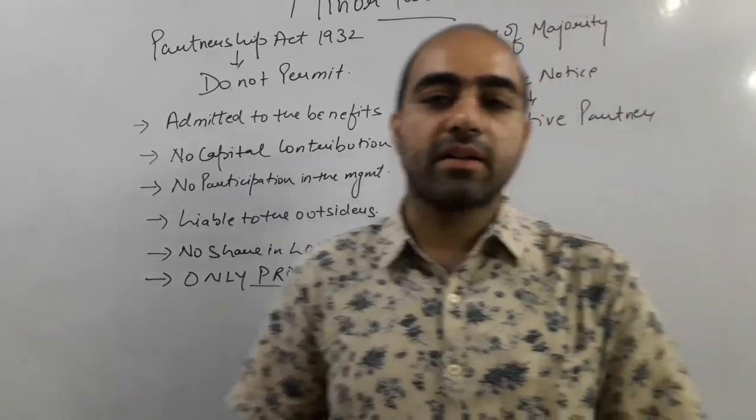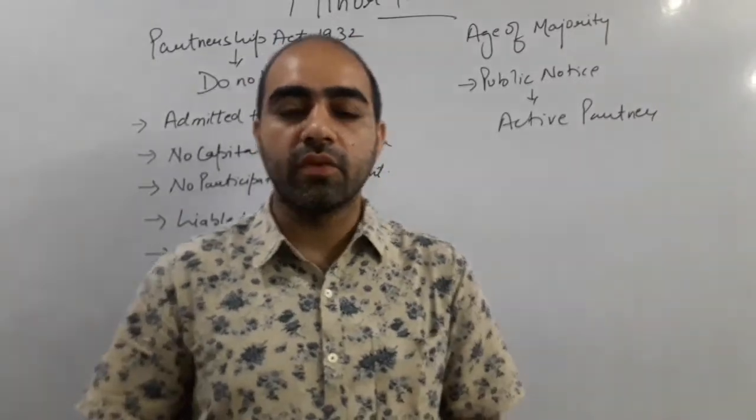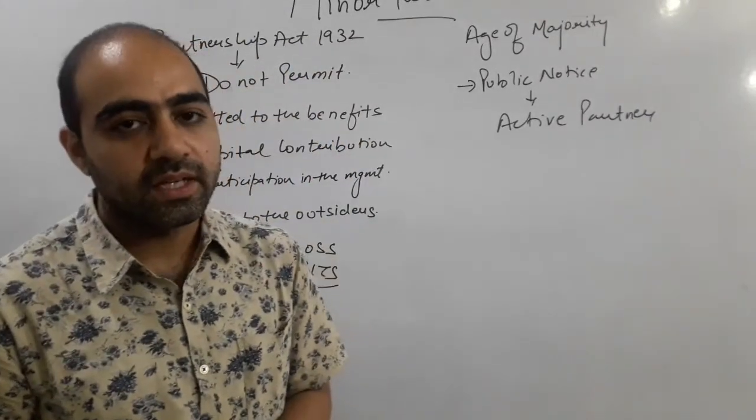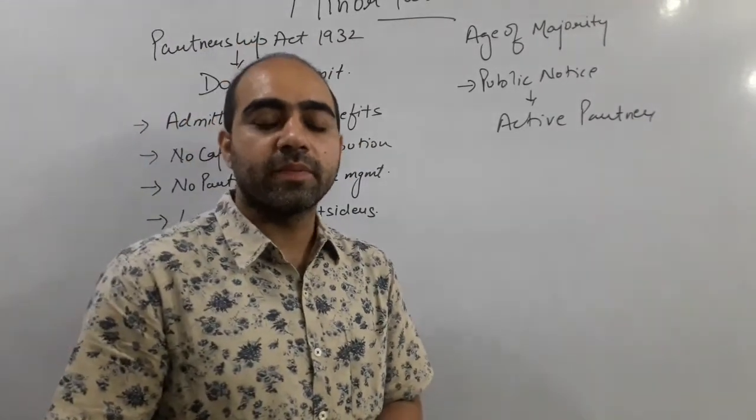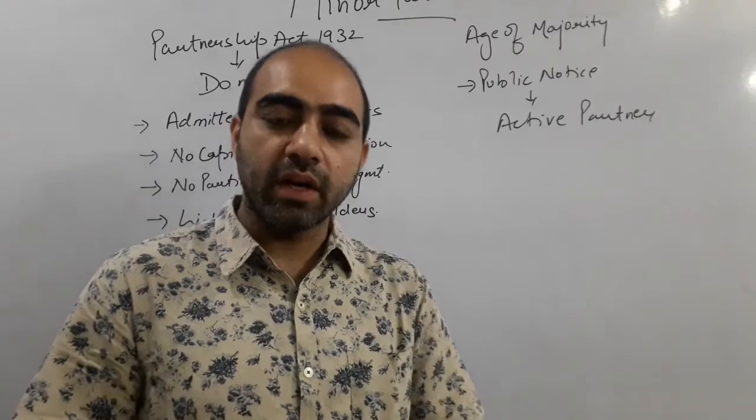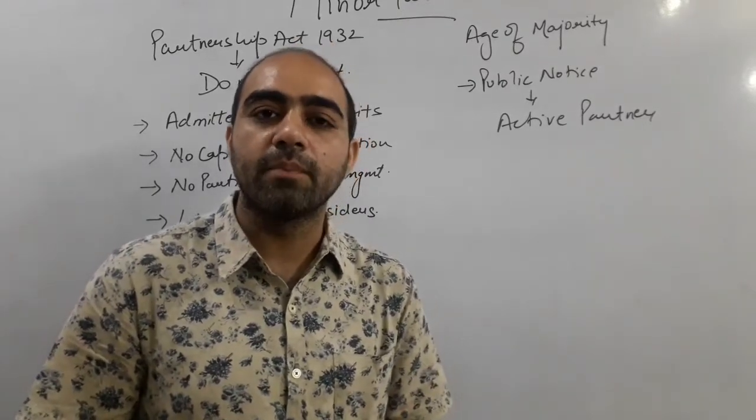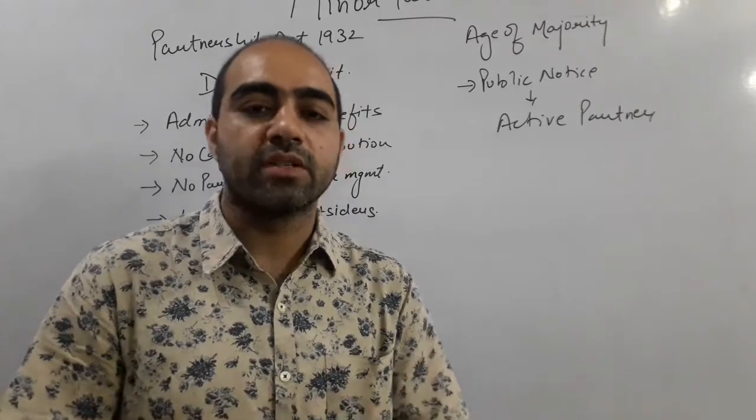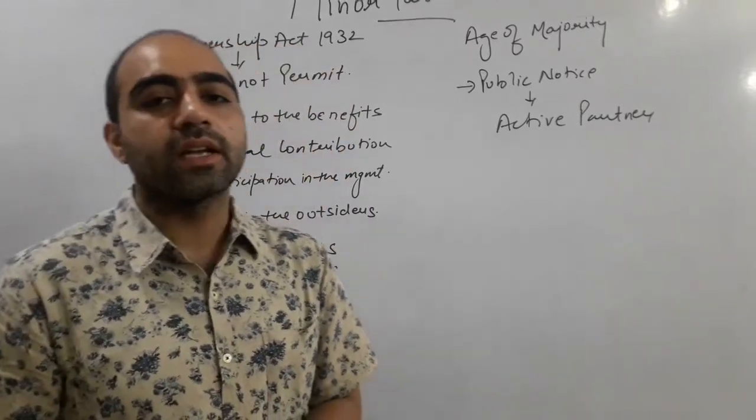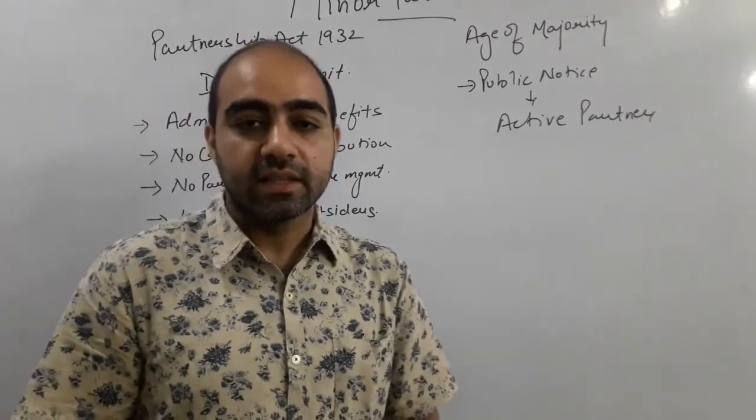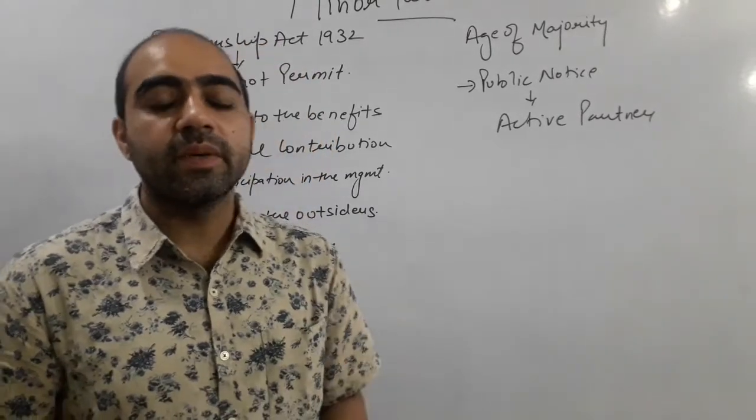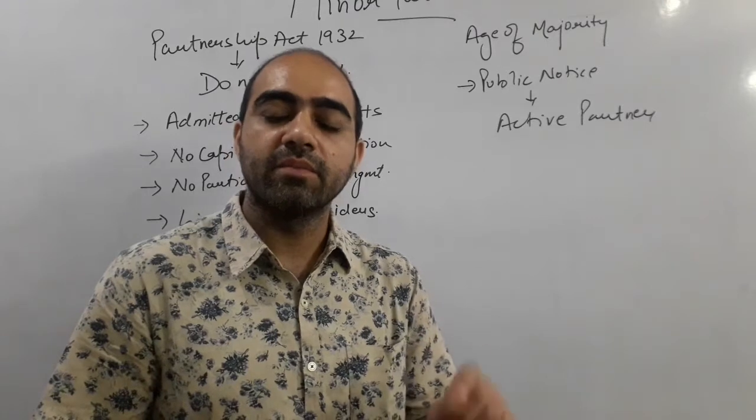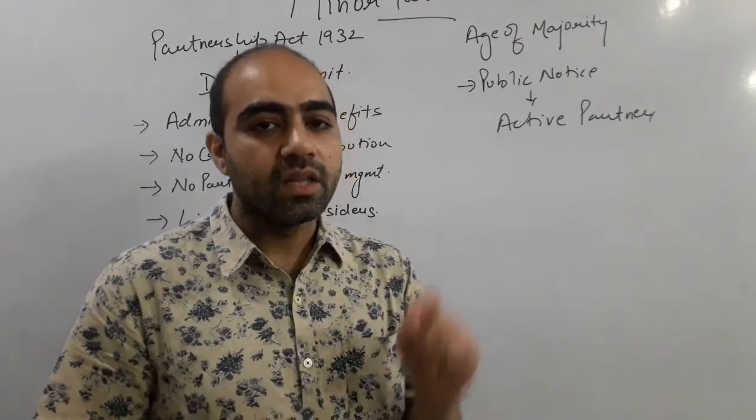As soon as the minor partner becomes of the age above 18 years of maturity, then according to the Partnership Act, the minor partner who has attained the majority needs to make a public notice that he has become a major partner. If they do not declare any public notice, then it will be automatically declared that the particular partner has become an active partner.